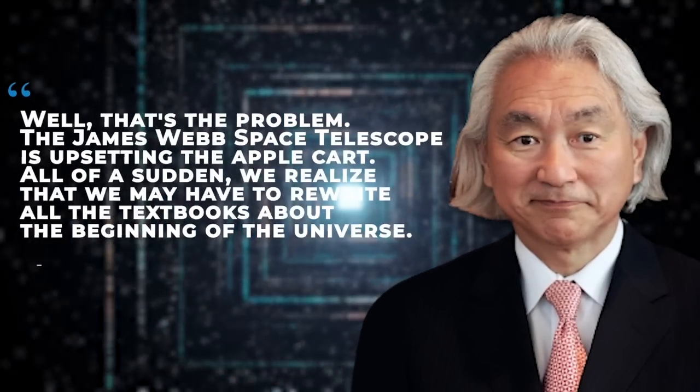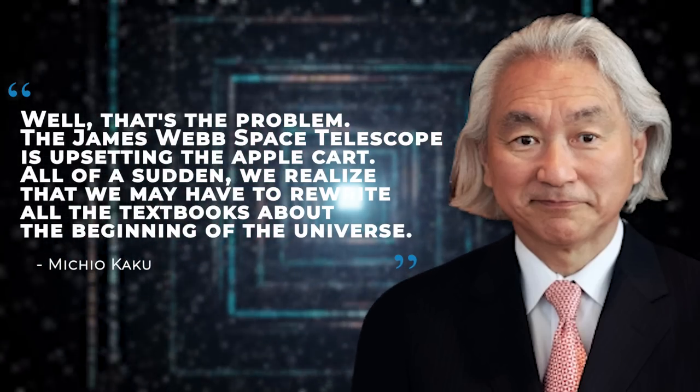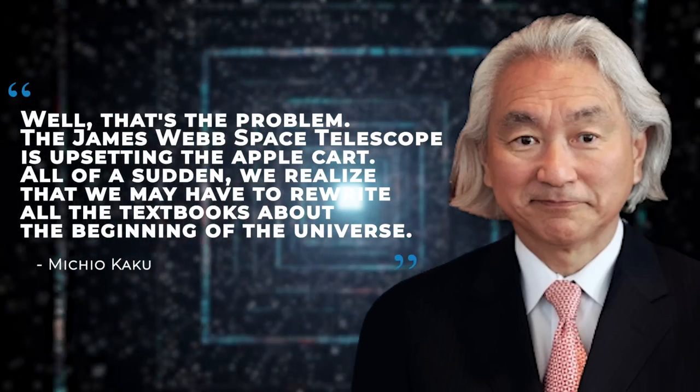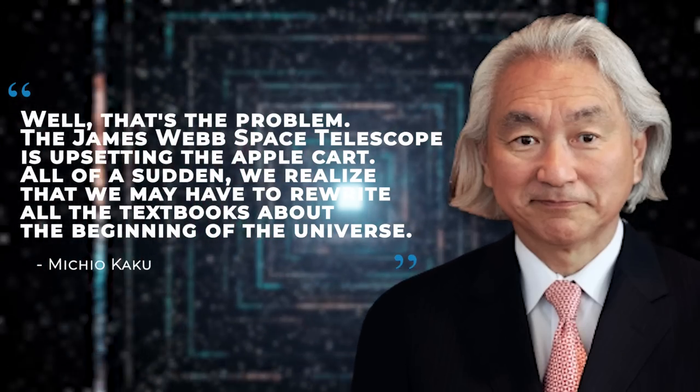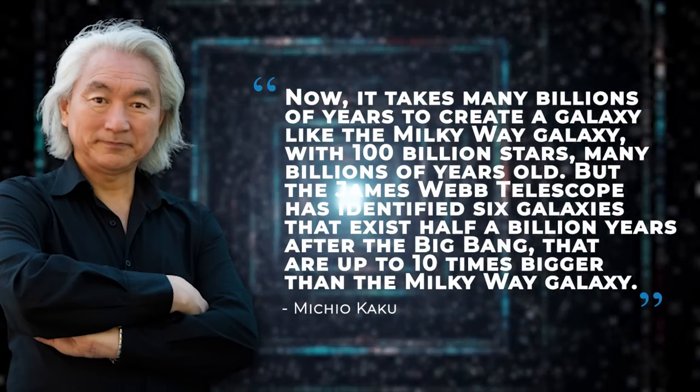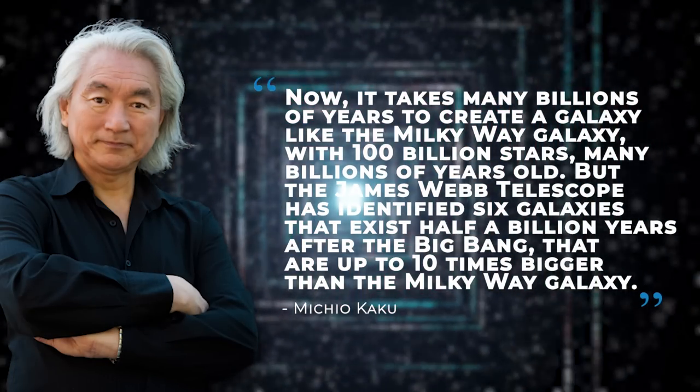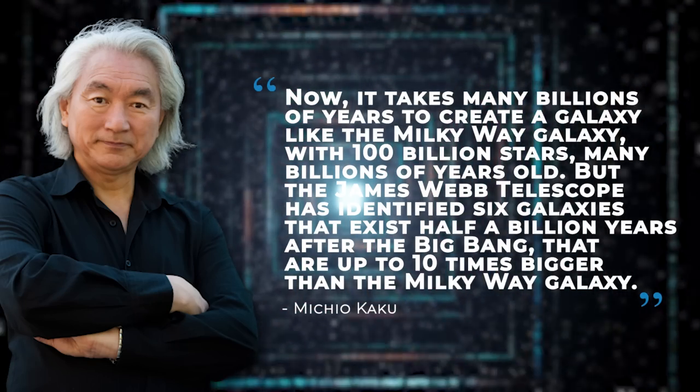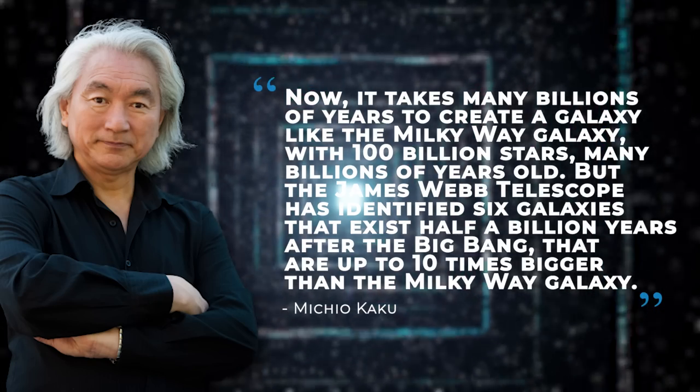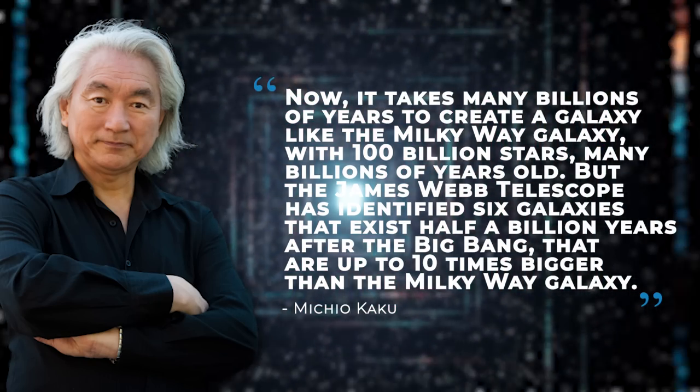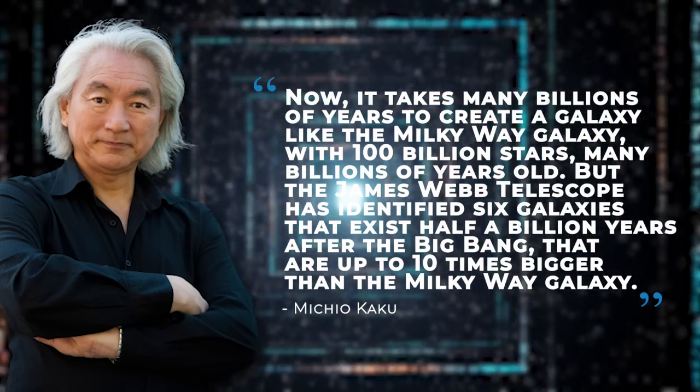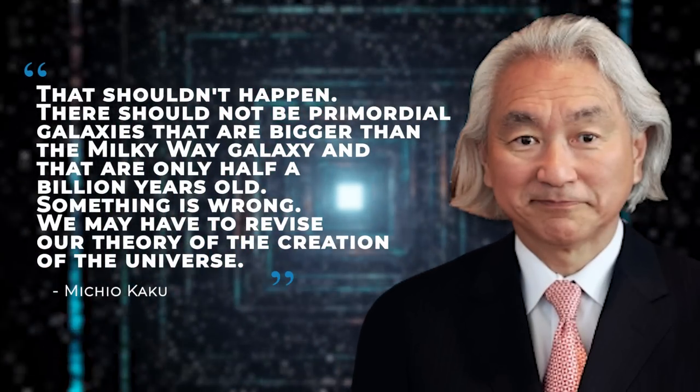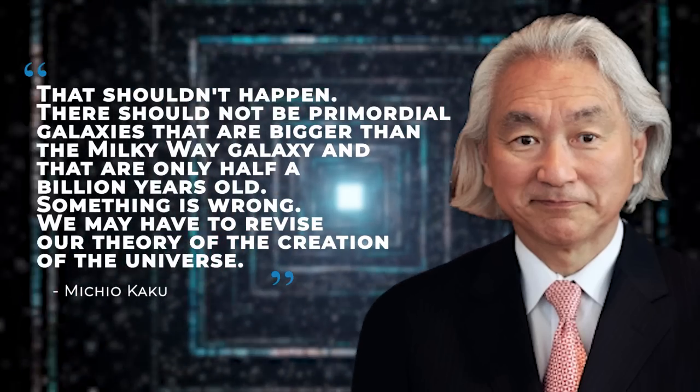According to Michio Kaku, well, that's the problem. The James Webb Space Telescope is upsetting the apple cart. All of a sudden, we realize that we may have to rewrite all the textbooks about the beginning of the universe. Now, it takes many billions of years to create a galaxy like the Milky Way Galaxy, with 100 billion stars, many billions of years old. But the James Webb Telescope has identified six galaxies that exist half a billion years after the Big Bang that are up to 10 times bigger than the Milky Way Galaxy. That shouldn't happen. There should not be primordial galaxies that are bigger than the Milky Way Galaxy and that are only half a billion years old. Something is wrong.